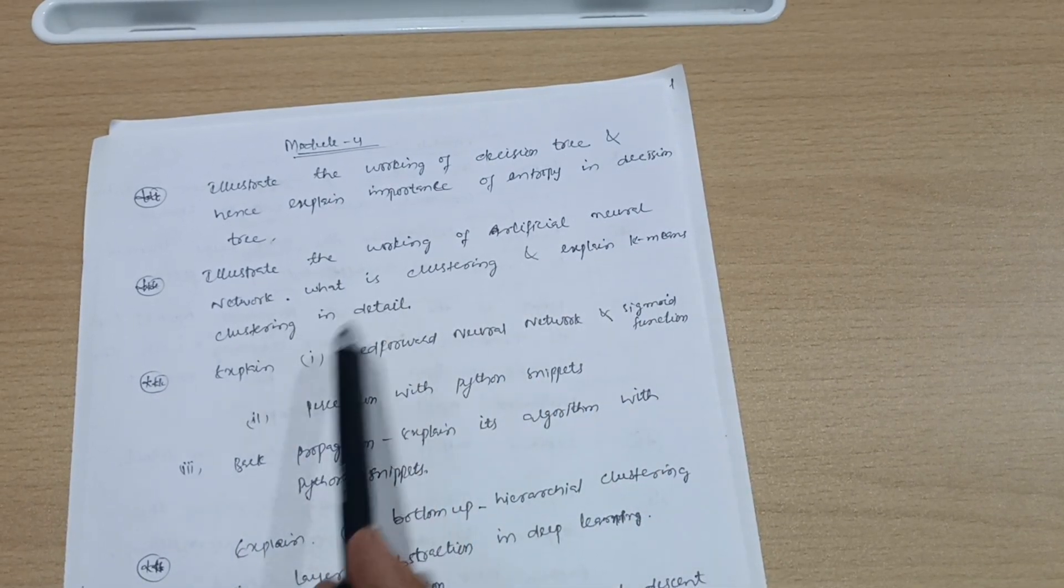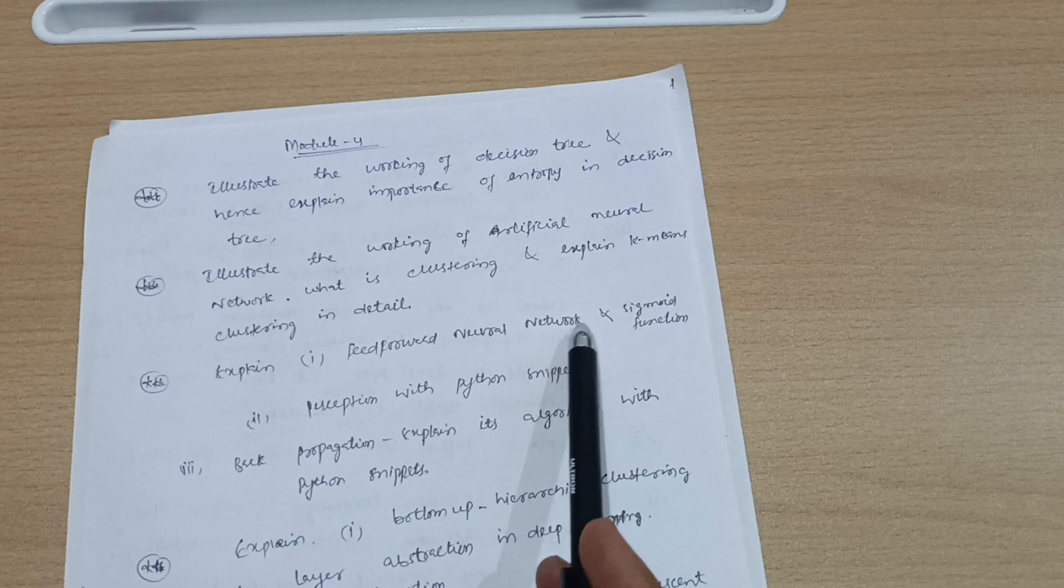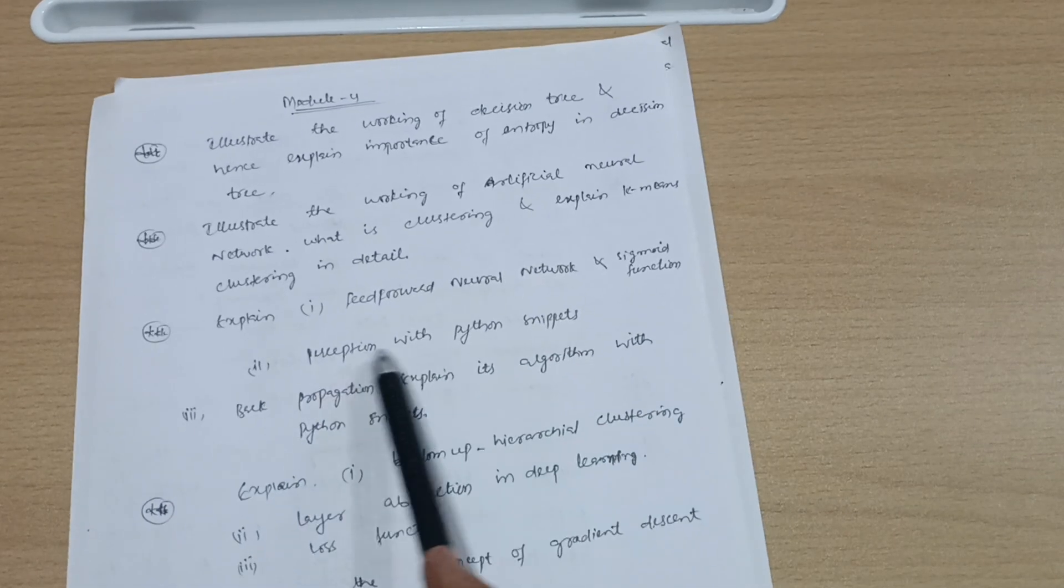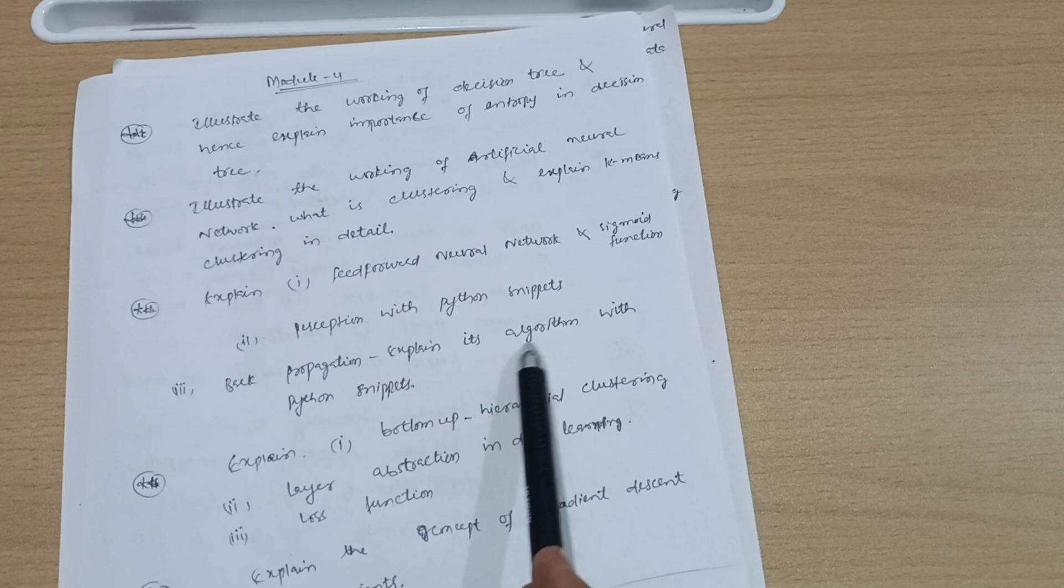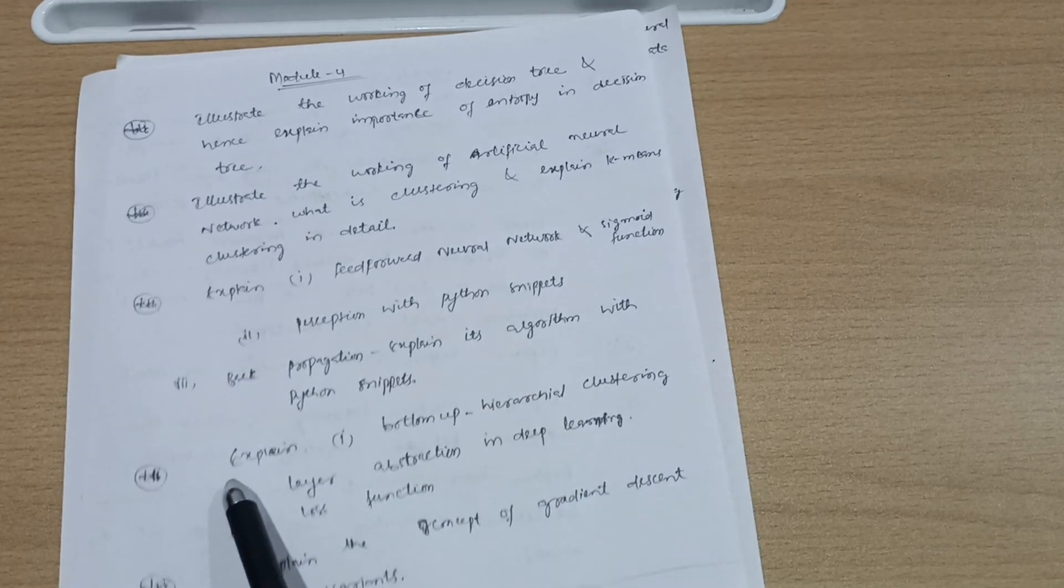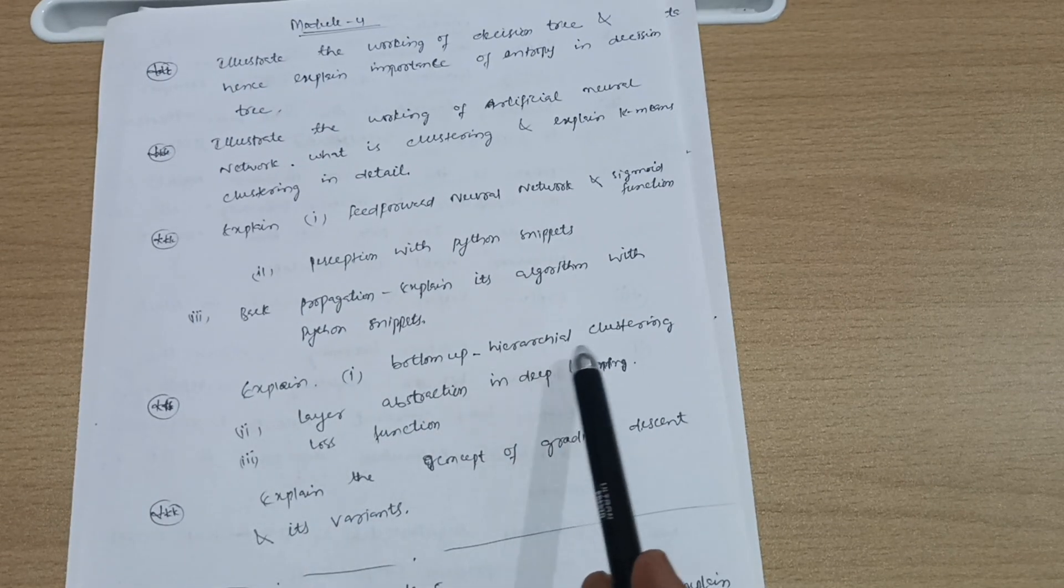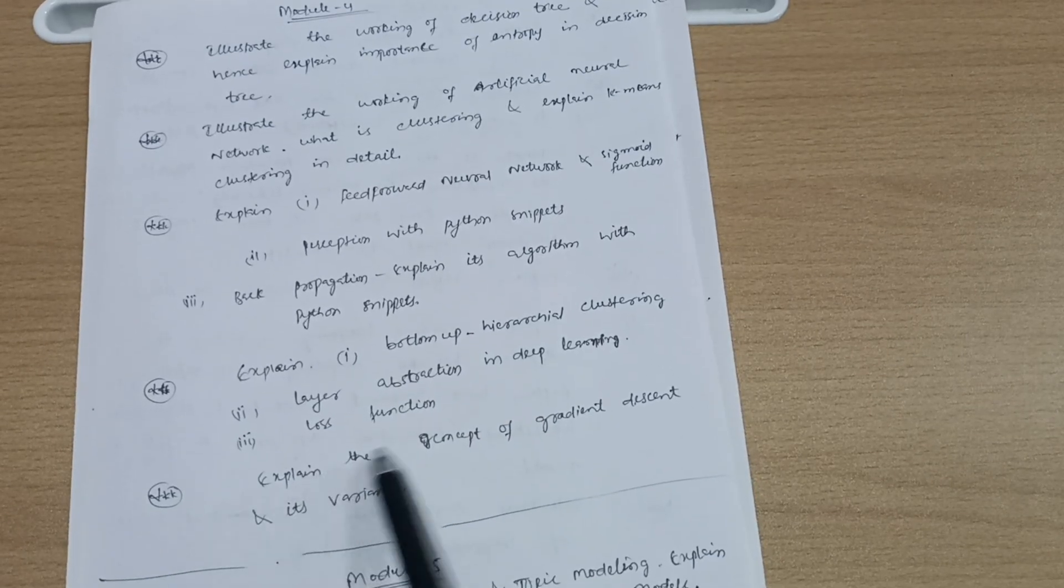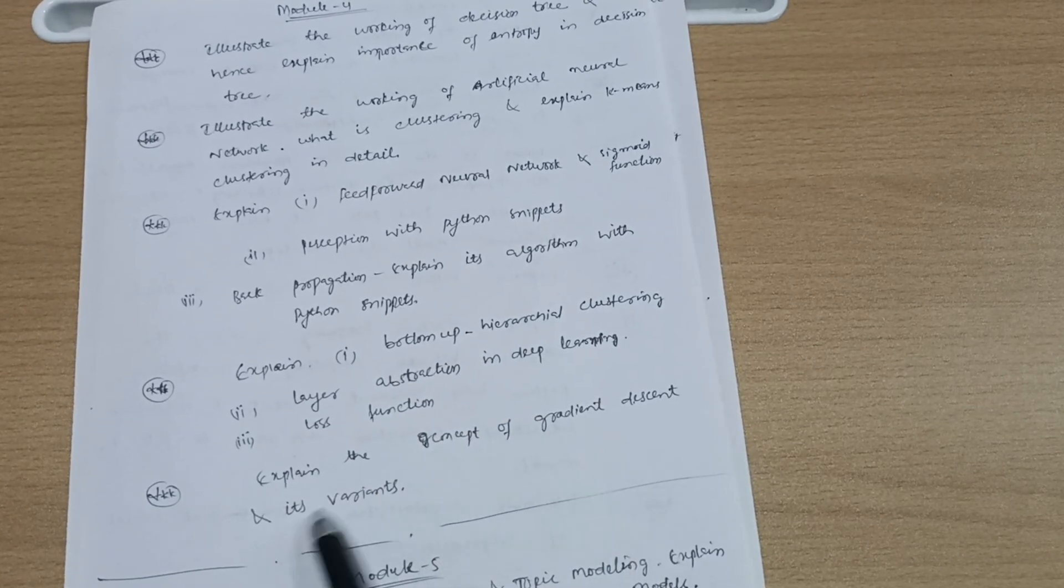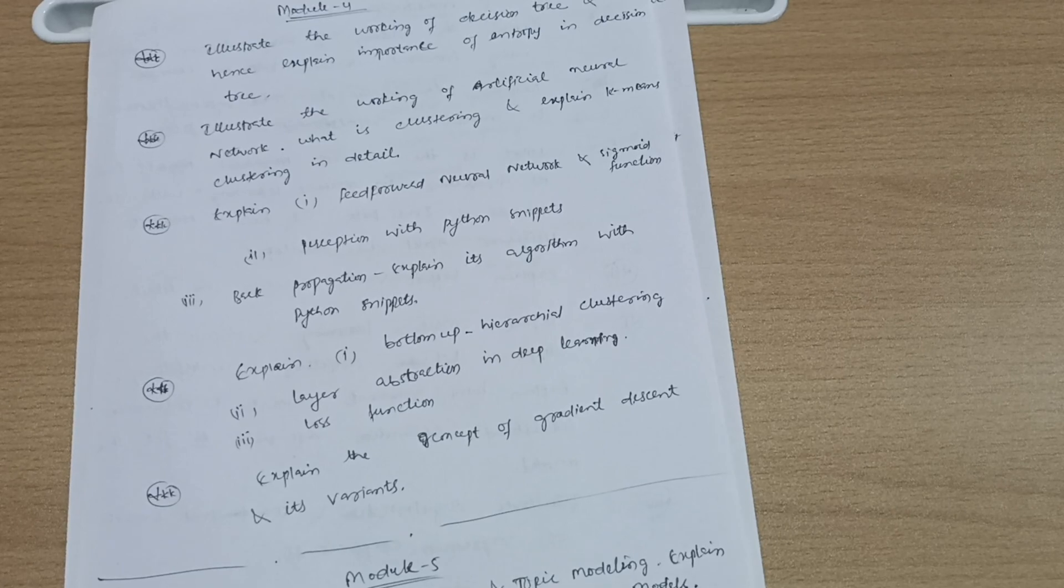Explain feed-forward neural network and sigmoid function perceptron with Python snippets and backpropagation. Expand its algorithm with Python snippets. Explain bottom-up hierarchical clustering, layer abstraction in deep learning—repeated questions. Loss function, explain the concept of gradient descent and its variants. These are six questions from module 4.